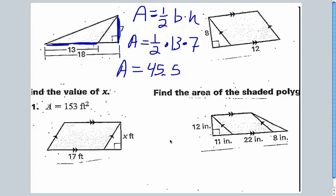Next one, I have a parallelogram. The formula for a parallelogram is just base times height. The base of the parallelogram is 12, and the height is 8. So area equals 12 times 8 — A equals 96. If we had units, it would be square units.